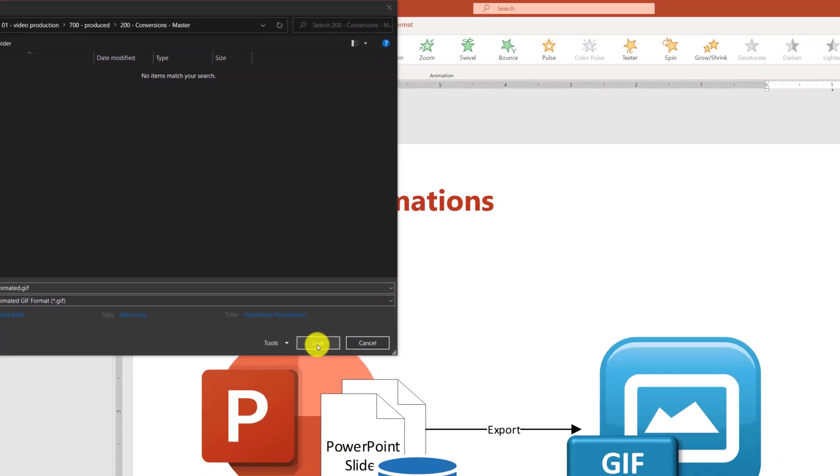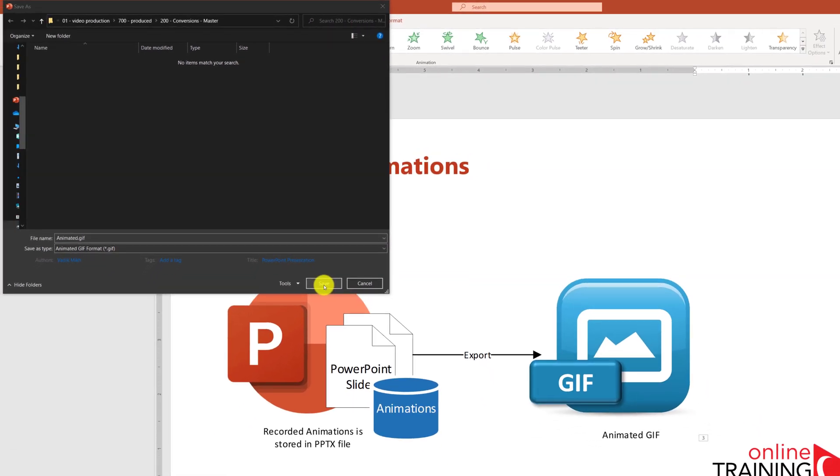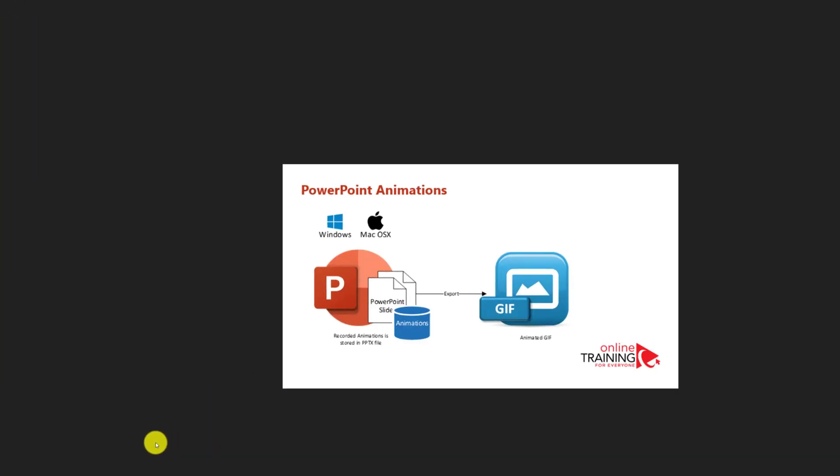After you save the file by clicking the Save button in the Save dialog box, you can open the file in File Explorer and preview the created animated GIF file.